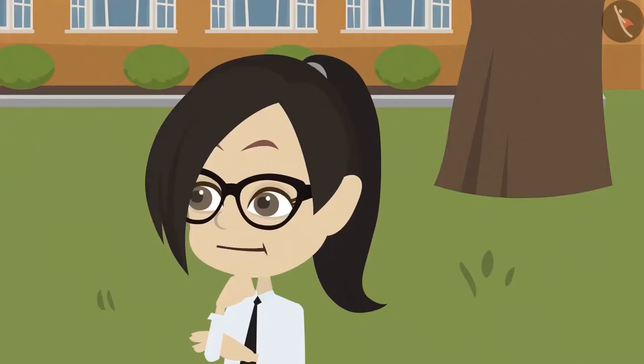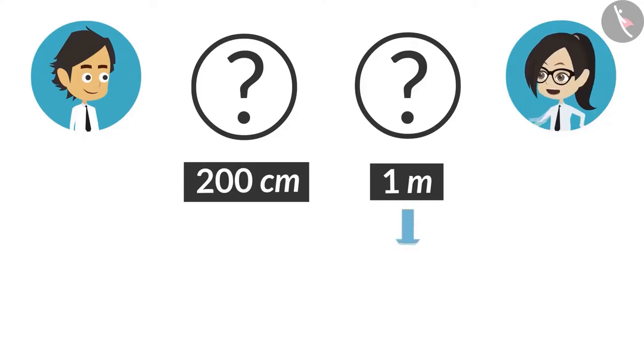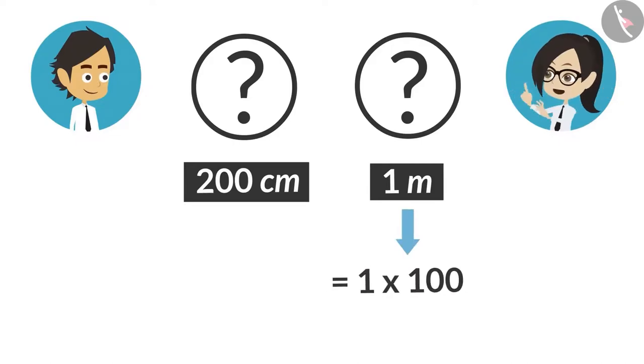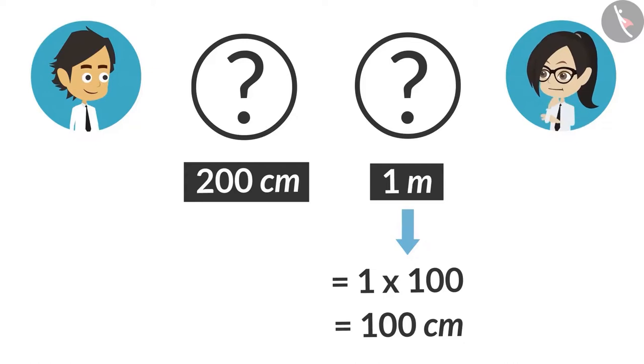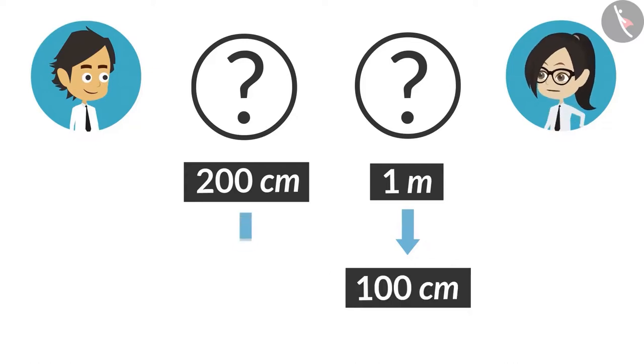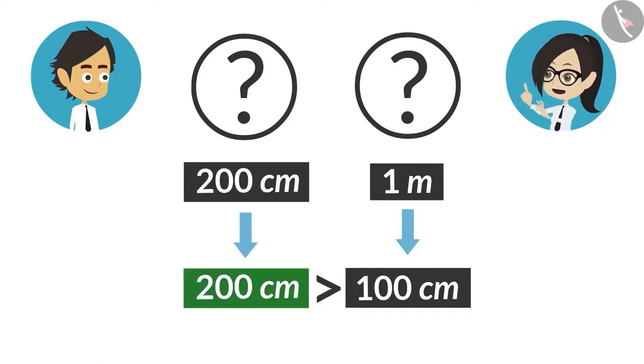Now I understand. To convert a meter into centimeter, we will multiply it with 100. So we can write it as 100 centimeters. Now if we compare 100 centimeters with 200 centimeters, then we can tell that 200 centimeters is bigger.